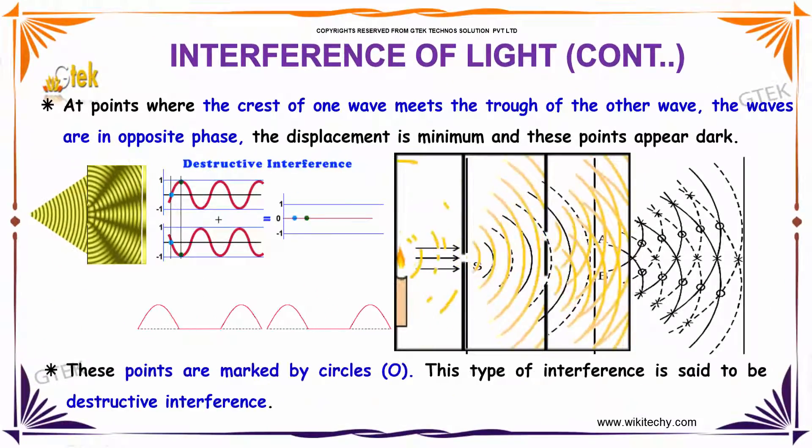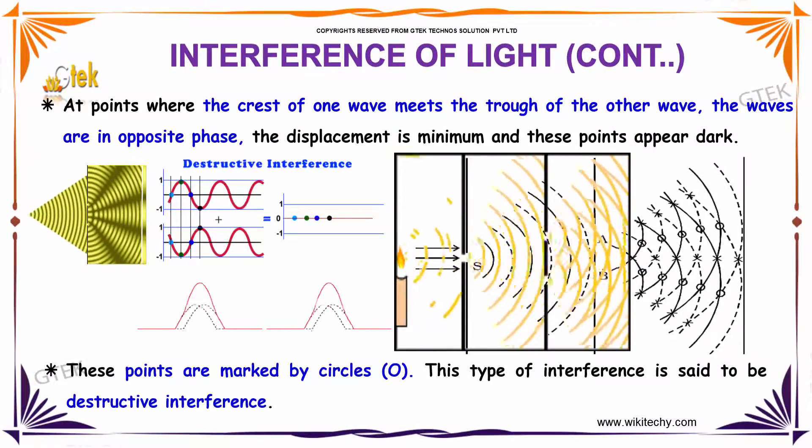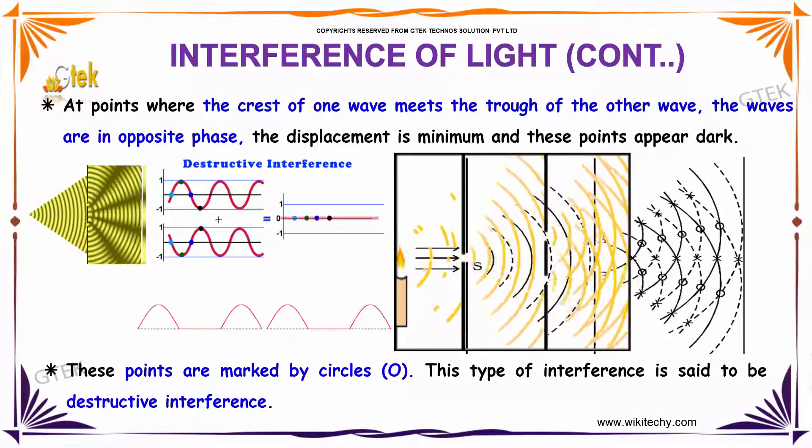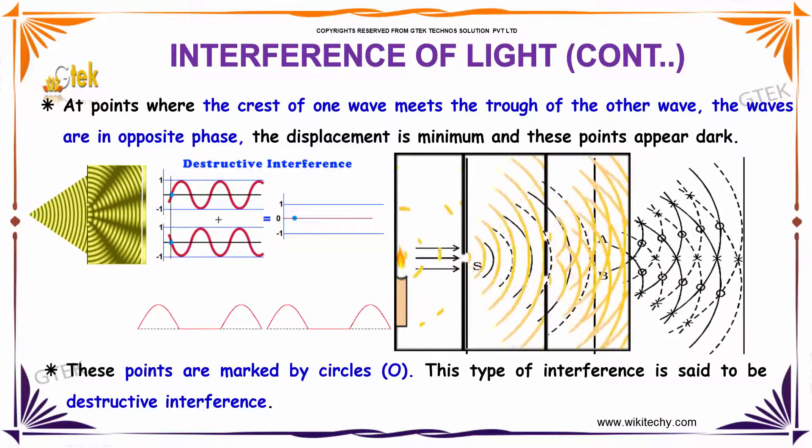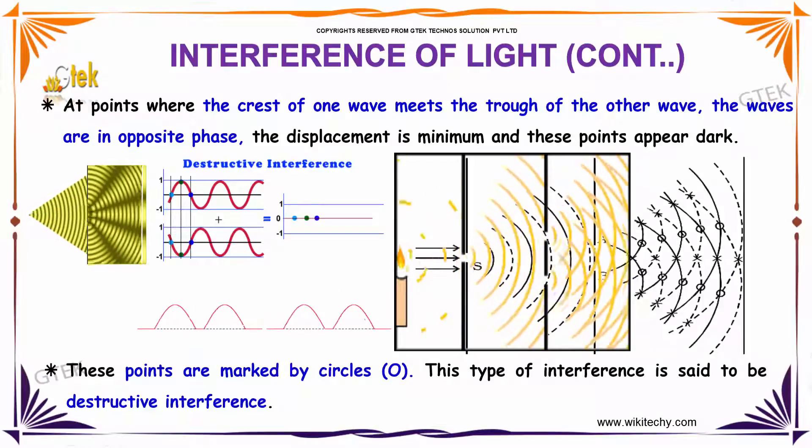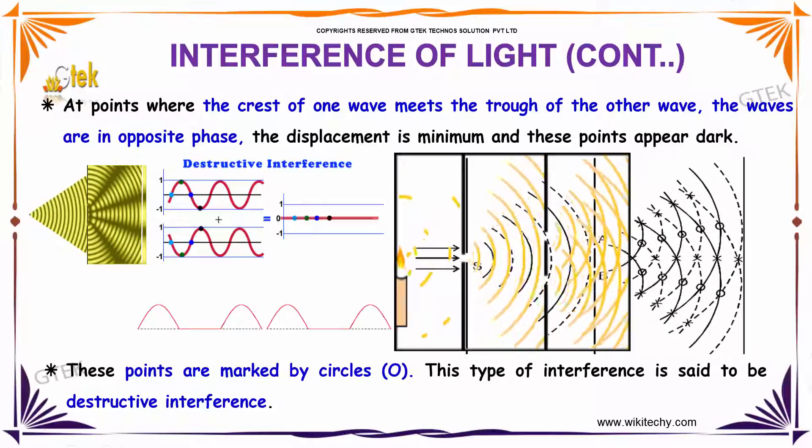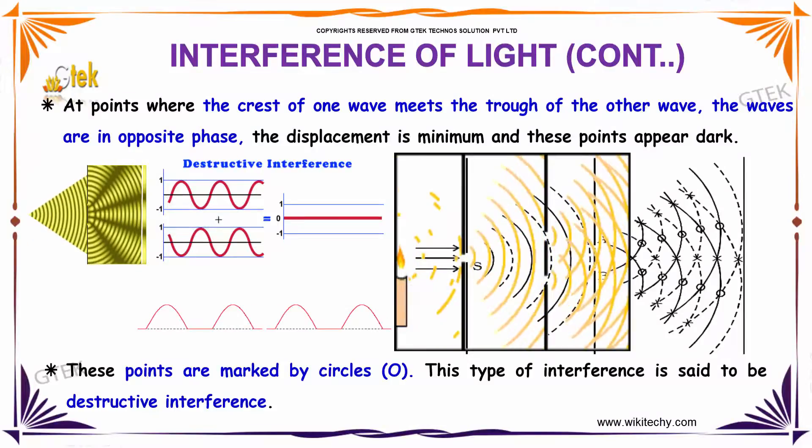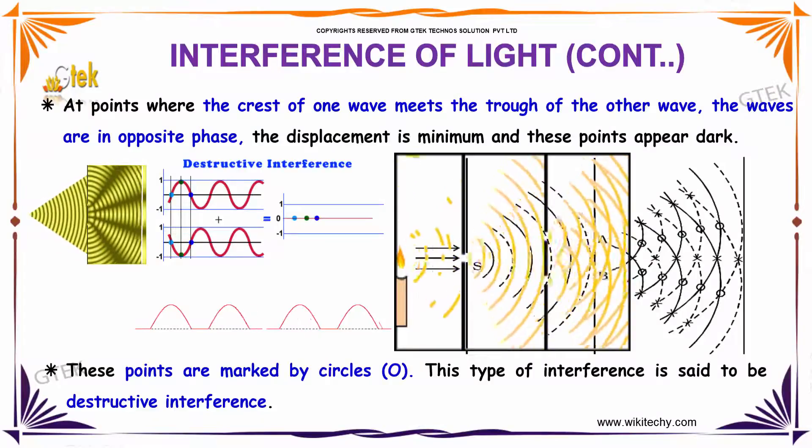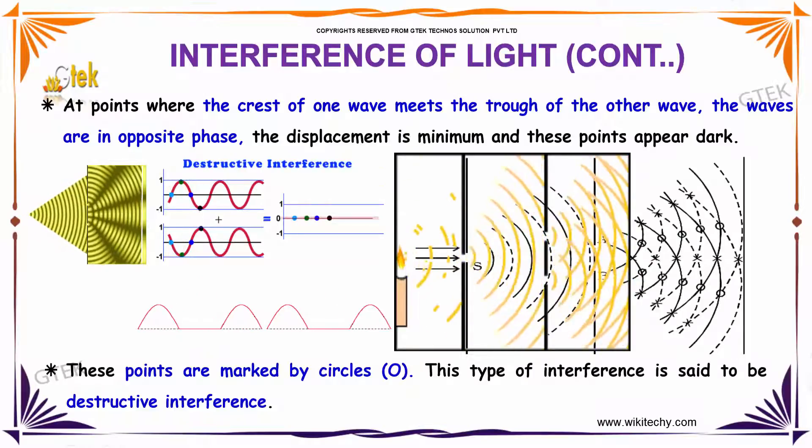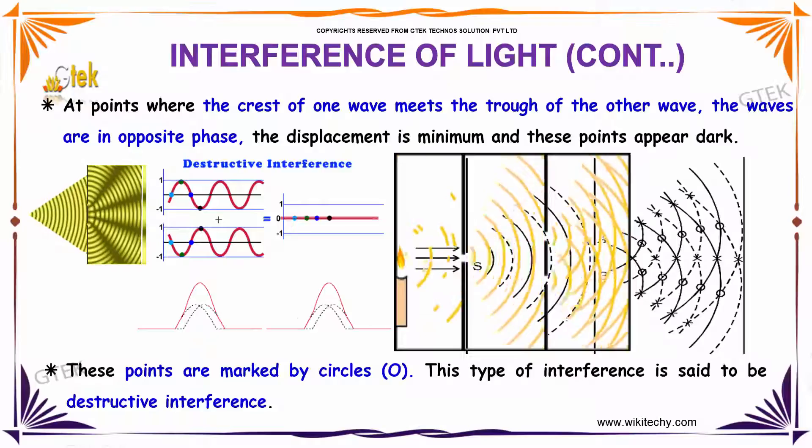At points where the crest of one wave meets the trough of another wave, the waves are in opposite phase and the displacement is minimum and these points are considered as dark points. These points are marked by circles O. This type of interference is said to be destructive interference.